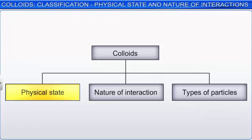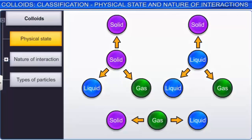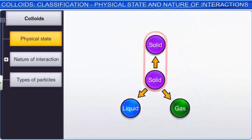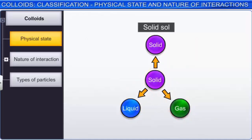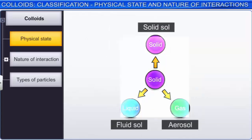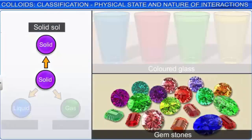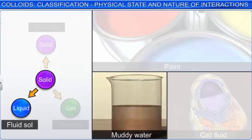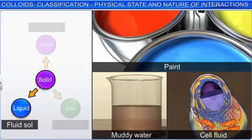Depending upon the physical state of the dispersed phase and dispersion medium, eight types of colloidal systems are possible. Dispersion of a solid in solid, liquid, or gas dispersion mediums results in the formation of a solid sol, fluid sol, and an aerosol respectively. Colored glass and gemstones are examples of solid sols. Aerosols, paint, muddy water, and cell fluids are fluid sols. Fluid sols are mostly referred to as sols. Examples of aerosols are smoke and dust.